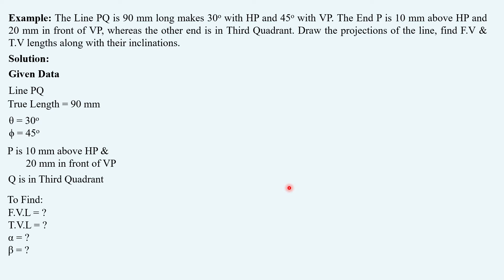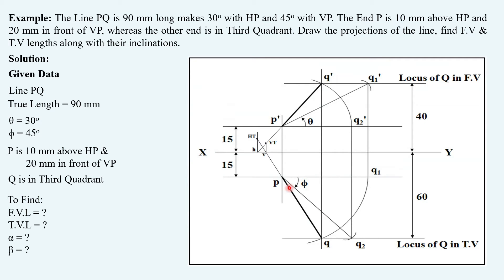To find: front view length, top view length, alpha and beta. Let us put this given data on our normal solution in order to understand how to start with the solution.